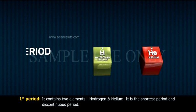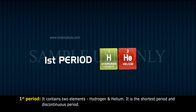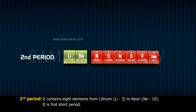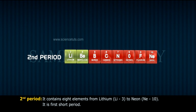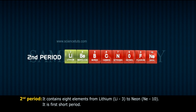The first period contains two elements, hydrogen and helium. It is the shortest period and a discontinuous period. The second period contains eight elements from lithium-3 to neon-10. It is the first short period.